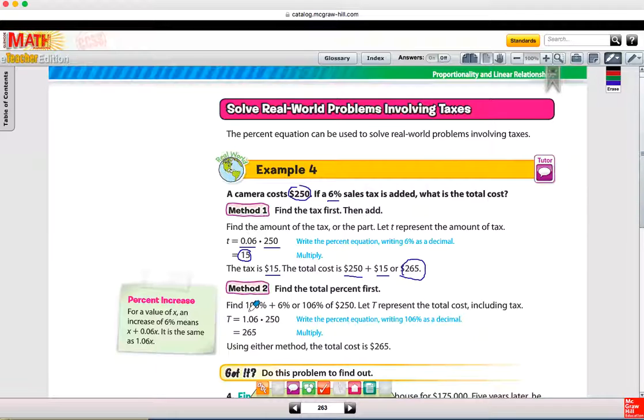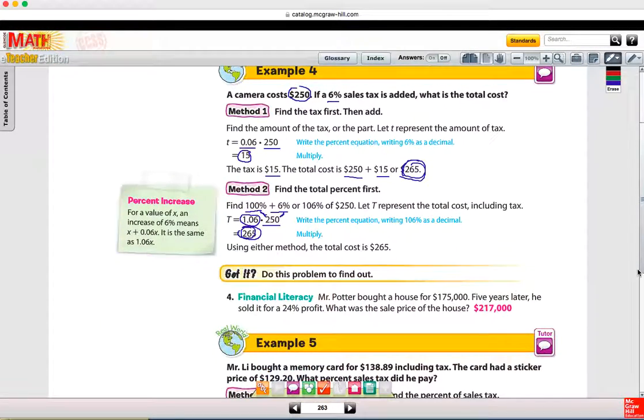Notice on method 2, 100% plus 6% combined is 1.06. Why would you use this method? Well, in one step, it gives you the price of the camera, which is the 100% part, and it includes the price of the tax, which is 6%, and in one calculation you get $265. Same answer that we got in method 1, but method 2 is just one step. It's really a matter of preference on these problems. I like the second method better because it's one less step.